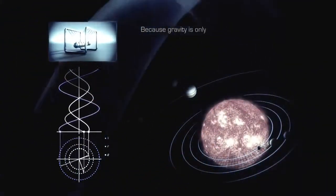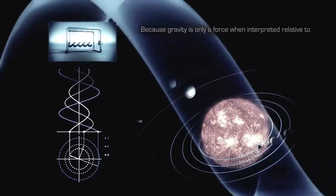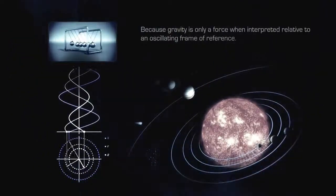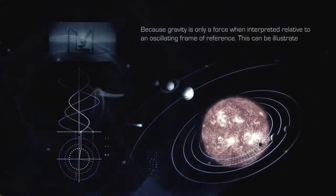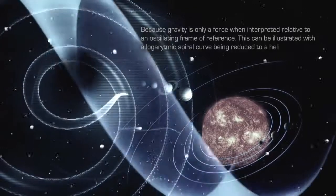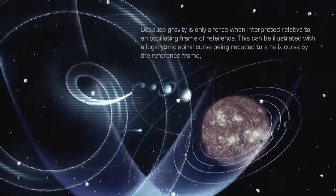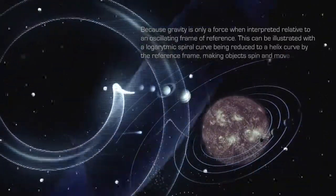Because gravity is only a force when interpreted relative to an oscillating frame of reference. This can be illustrated with a logarithmic spiral curve being reduced to a helix curve by the reference frame, making objects spin and move in orbits.